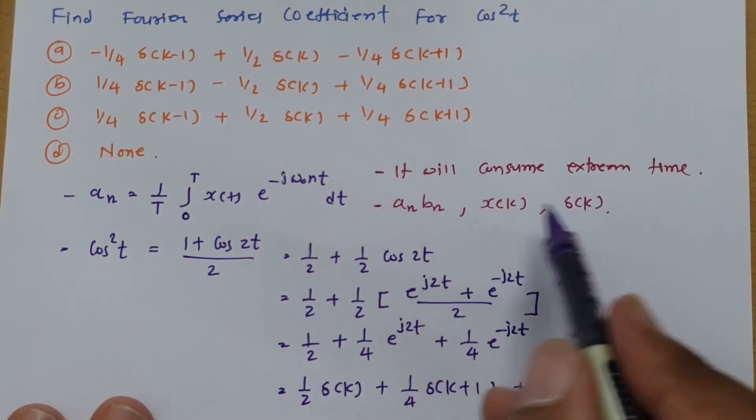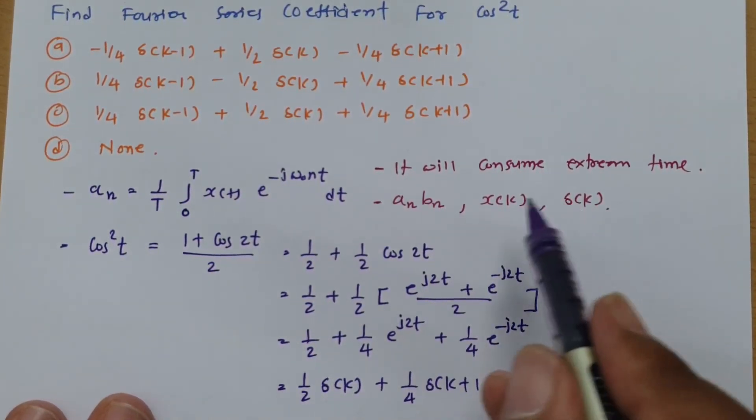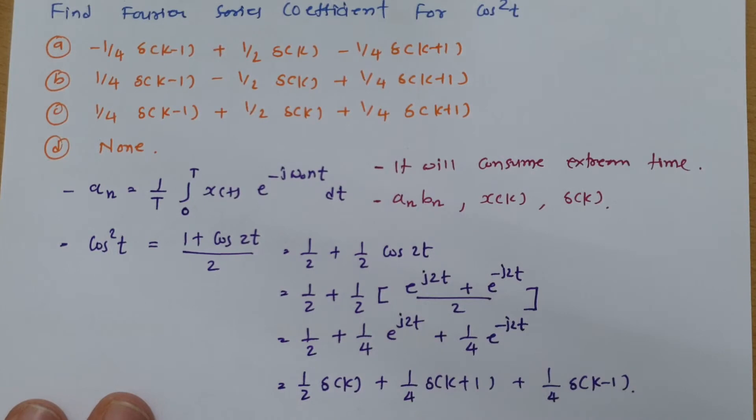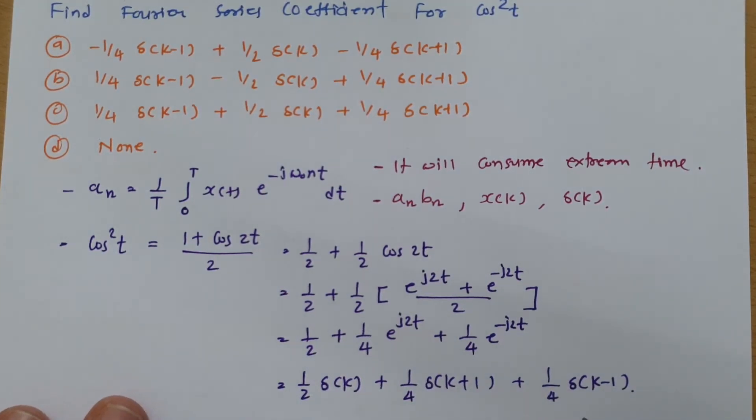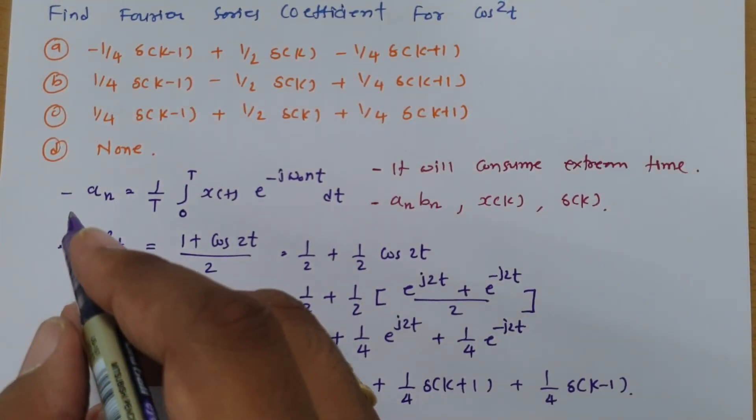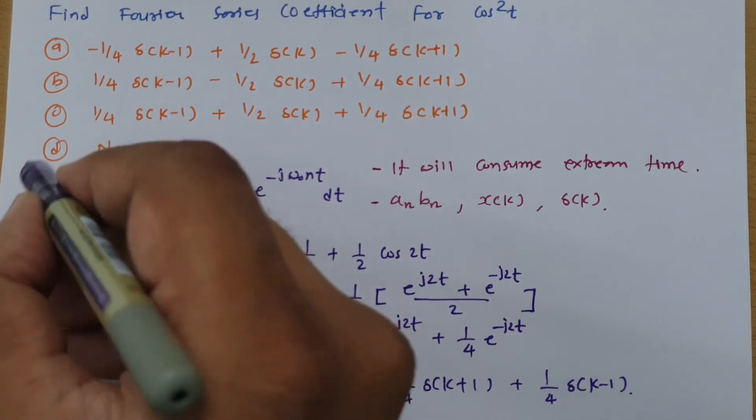So this is even one way. As I have told you, we can represent this in terms of delta or x of or an and bn. So here we have represent that in terms of delta of impulse function. So if you observe this answer in a, b, c, d then you will be finding the correct option is this c.